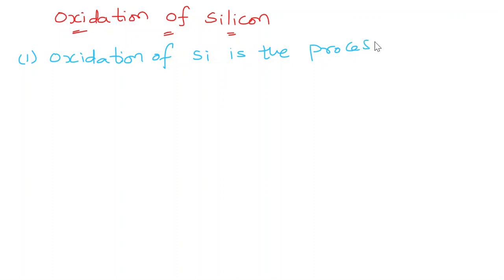In this video I will explain about oxidation of silicon. So what is the meaning of oxidation of silicon? Oxidation of silicon is the process of converting silicon into silicon dioxide.